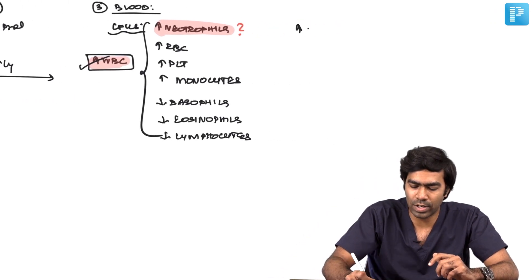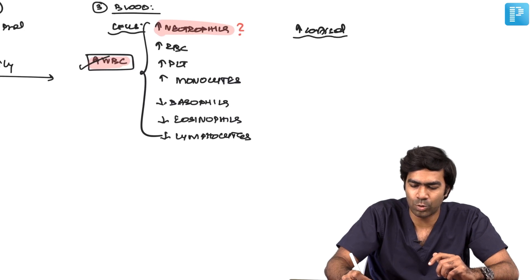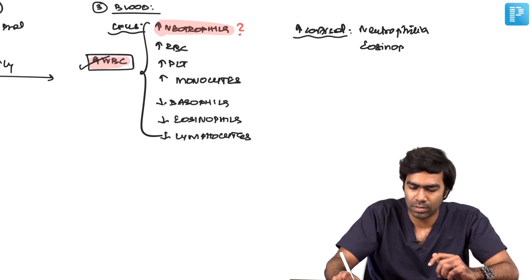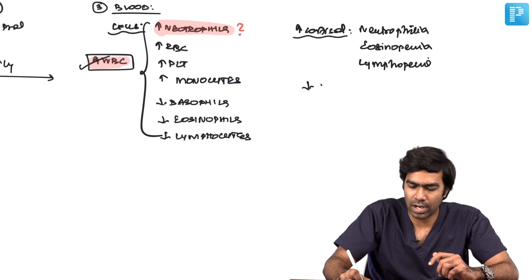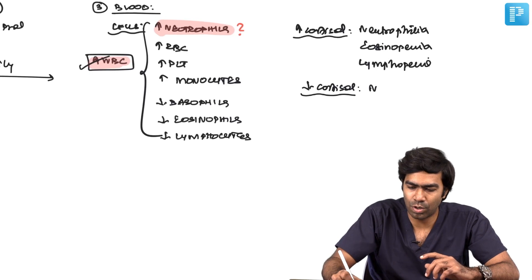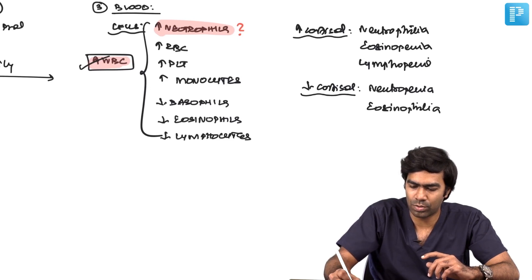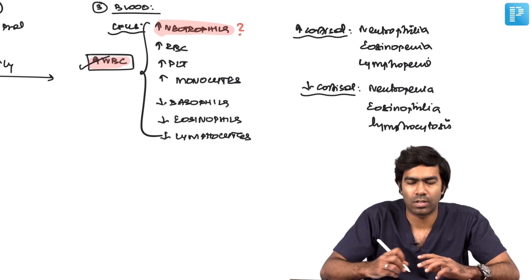That is the reason why in hypercortisolism like Cushing's, you will have neutrophilia, eosinopenia, and lymphopenia. Similarly, in patients with hypocortisolism like adrenal insufficiency, these patients will suffer from neutropenia, eosinophilia, and lymphocytosis.